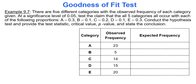In our first example, there are five different categories with the observed frequency of each category given at a significance level of 0.05. We are going to test the claim that all five categories occur with the following proportions: 0.3 from category A, 0.1 from B, 0.2 from C, 0.1 from D, and 0.3 from E. We'll conduct the hypothesis test and provide the test statistic, critical value, p-value, and state the conclusion.